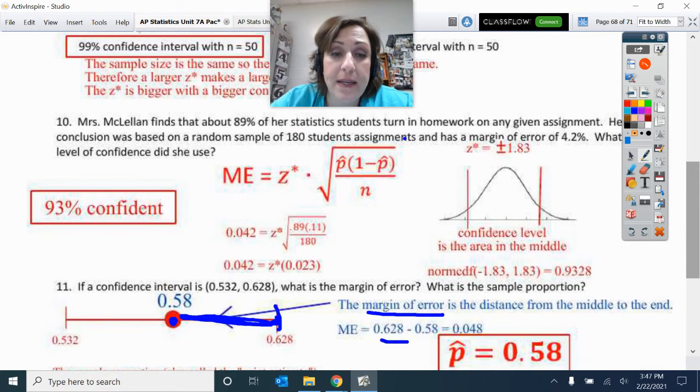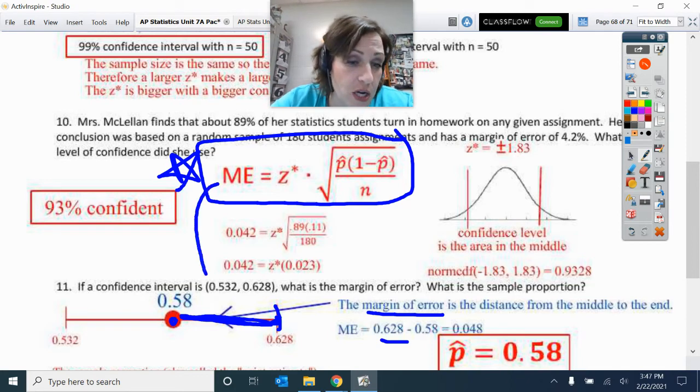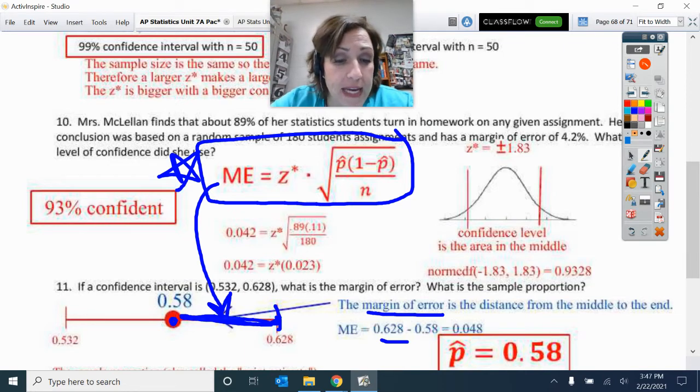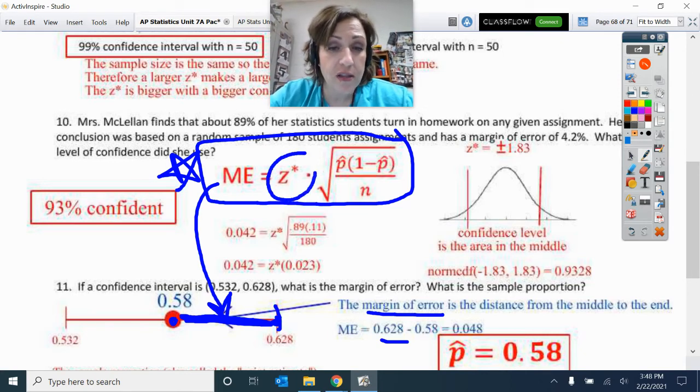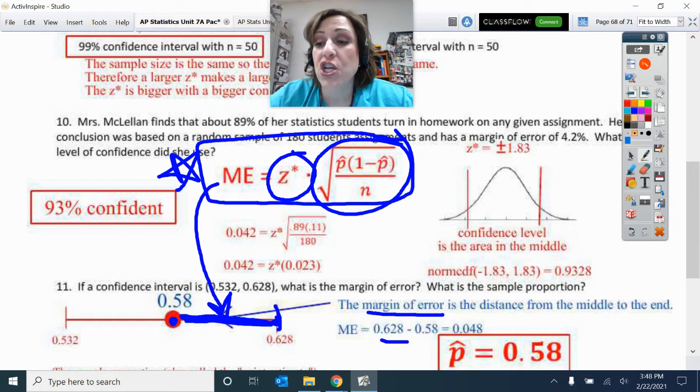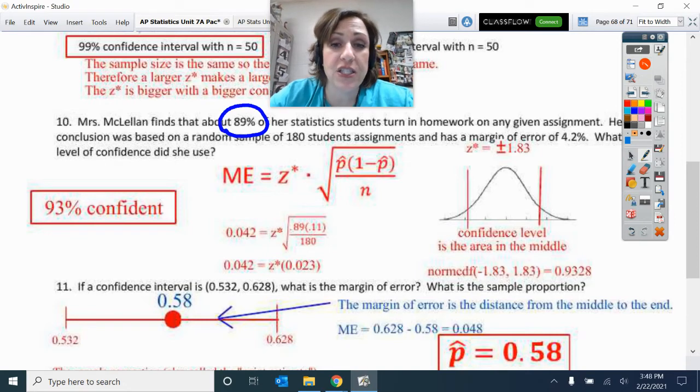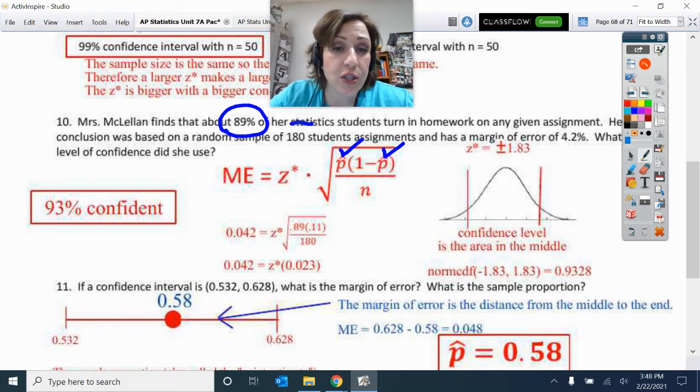Now, keep in mind this. This is not on the formula chart, but it's very important that you know the two things that make up this margin of error, that make up that whisker. The two things are the critical value, that is, from your confidence level related, and then, of course, your standard deviation. So what I know, what I have been told in this number 10 is 89%, so that is my P hat and my 1 minus P hat.